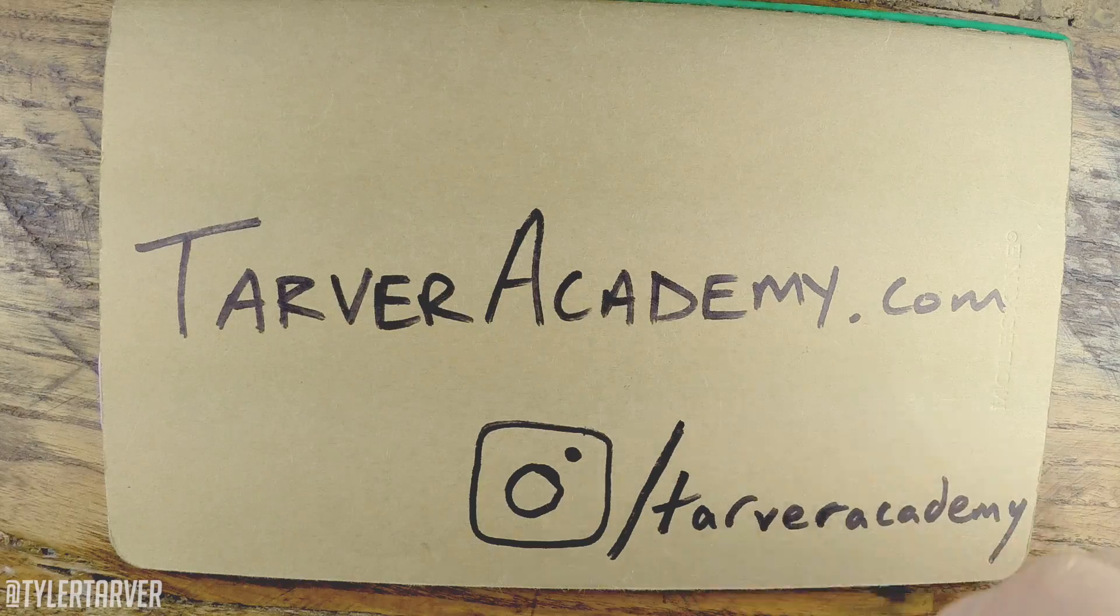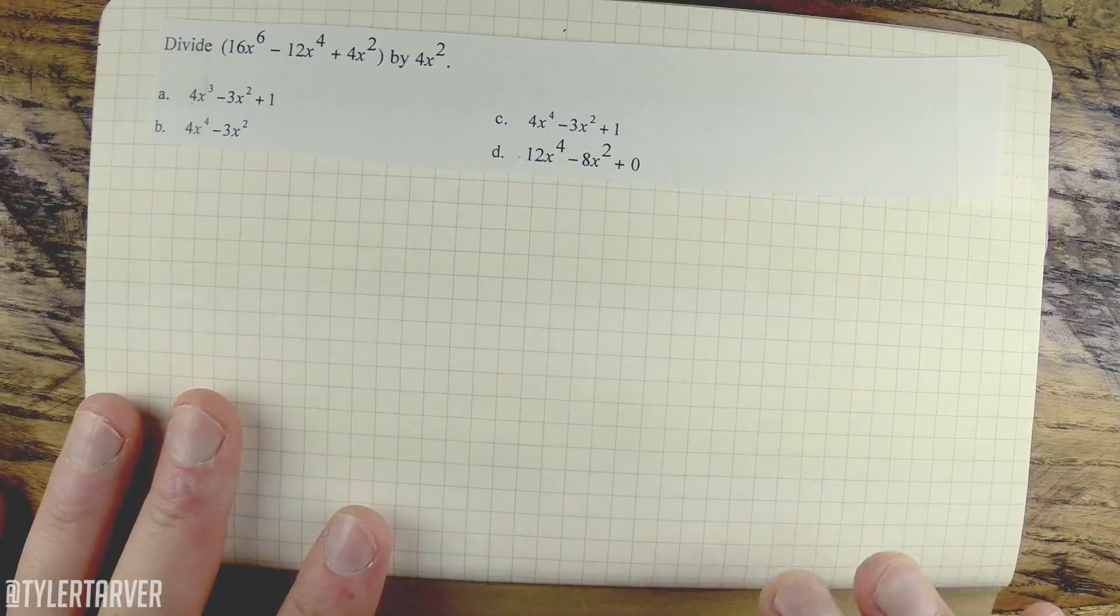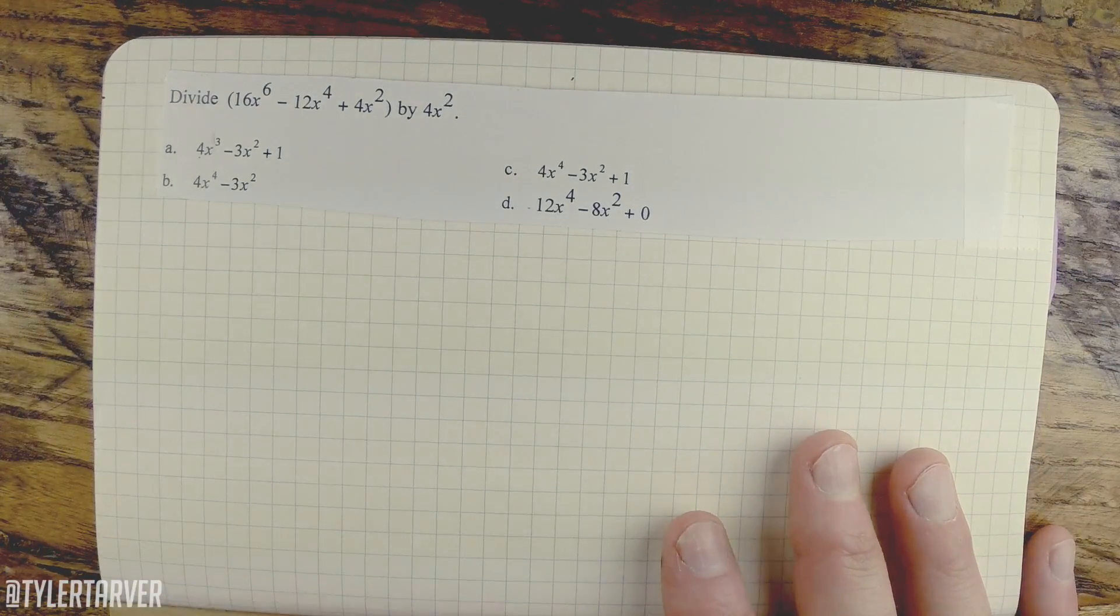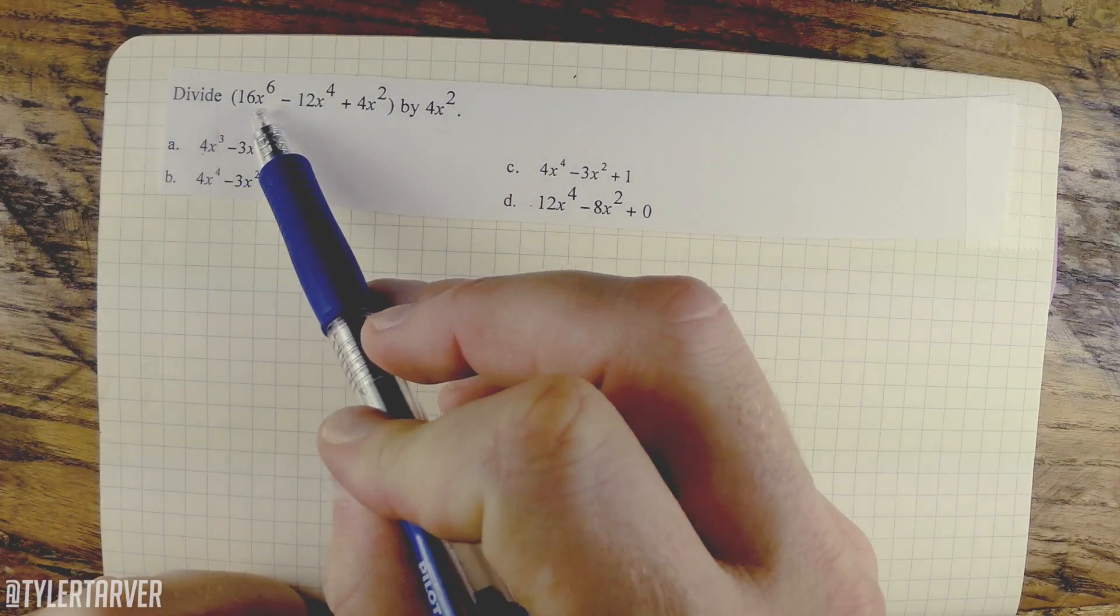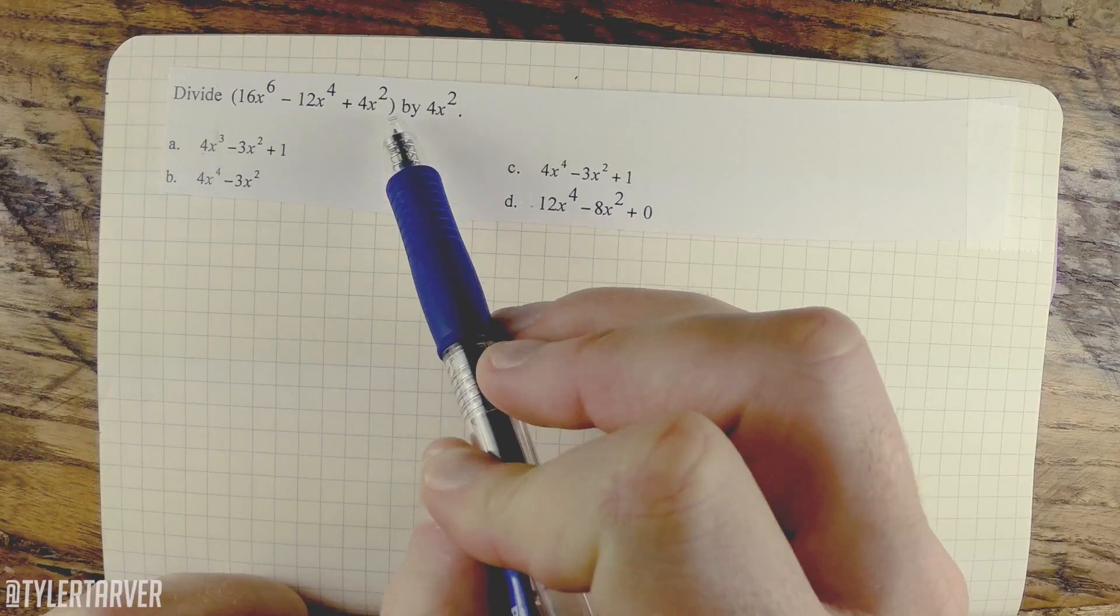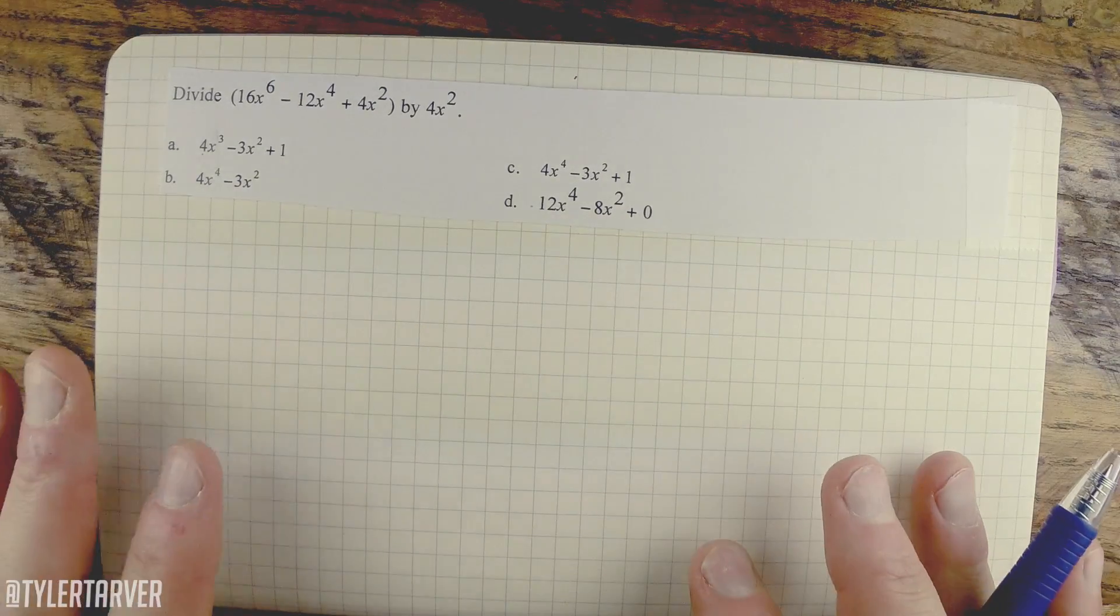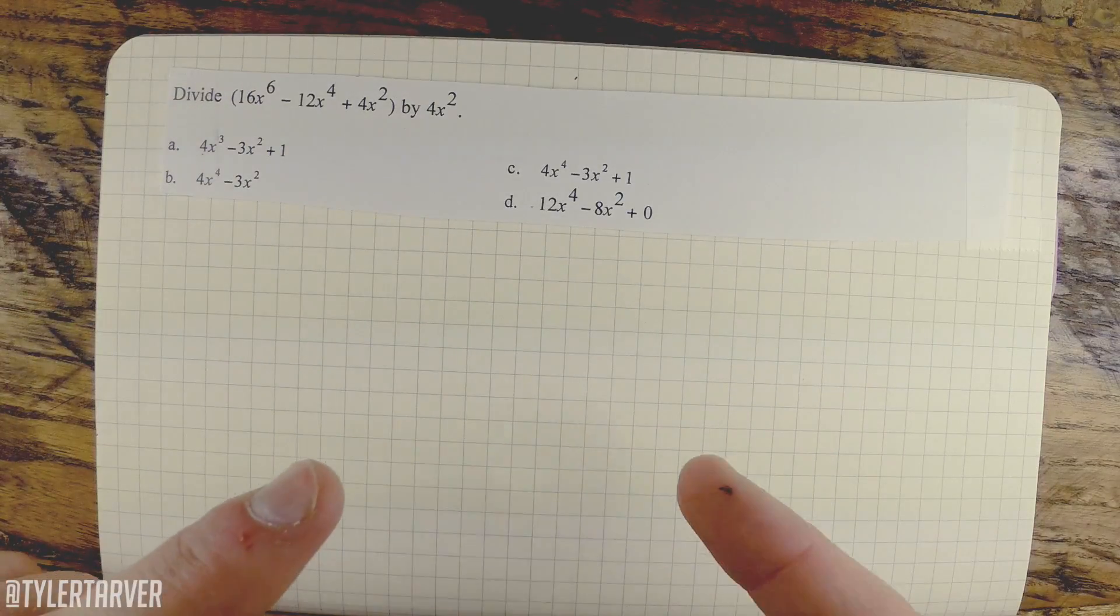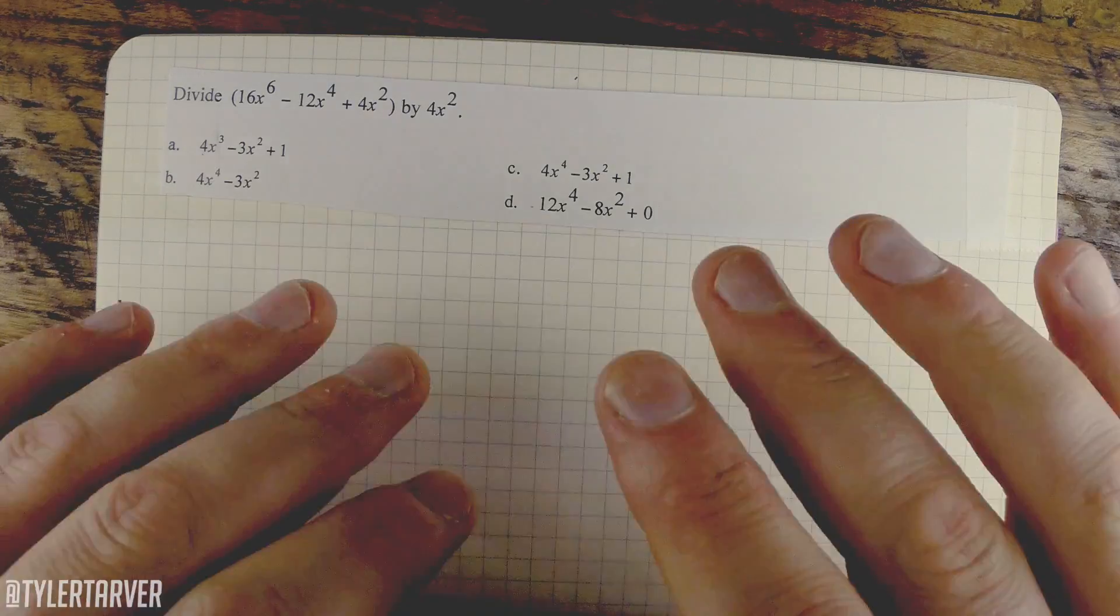What's up, this is Joe Biden for tarveracademy.com and we're gonna learn some math today. So let's stop talking and get started. The equation is divide 16x to the 6th minus 12x to the 4th plus 4x squared close parentheses by 4x squared. Okay, so pause the video, give it your best shot, and then hit resume and we'll see if we got it correct. Ready, go. And we're back at it.